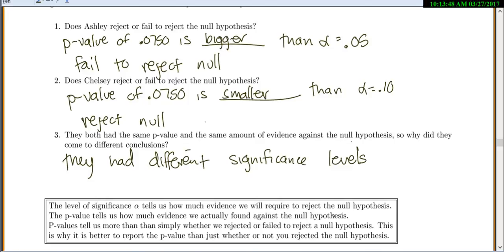Now the p-value tells you how much evidence you actually found against the null. So instead of how much evidence you're going to require, it's how much you actually find. So we like p-values a lot. P-values tell us more than simply whether or not you reject or fail to reject the null hypothesis. And that's why now the research community is moving towards everyone needs to report a p-value every time, because it gives you more information.